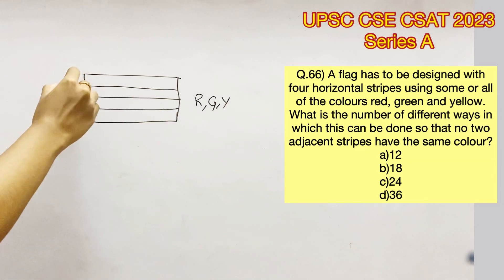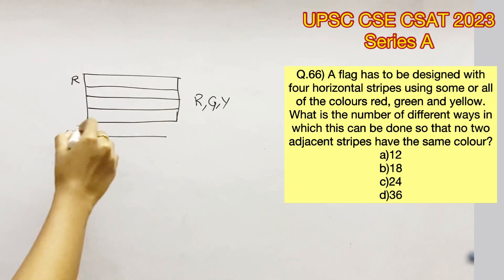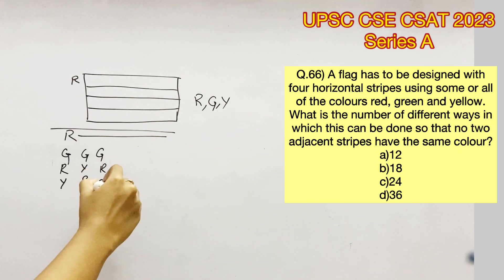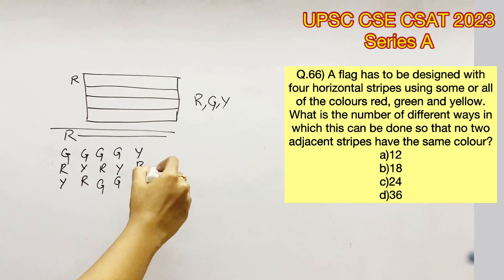Let's fix the first stripe to be red. The next three stripes can be: green red yellow, green yellow red, green red green, green yellow green, yellow red green, yellow red yellow, yellow green red, and yellow green yellow.